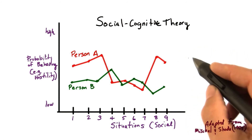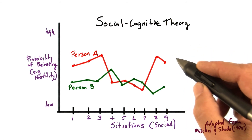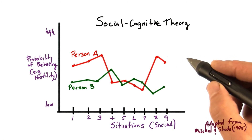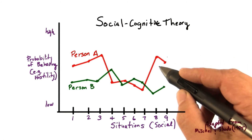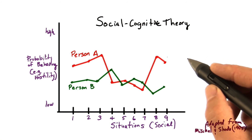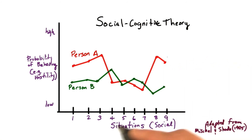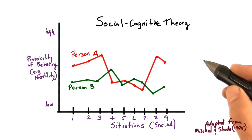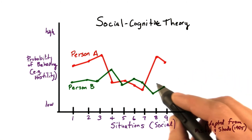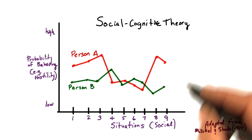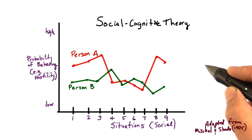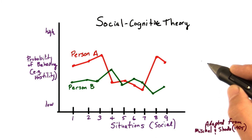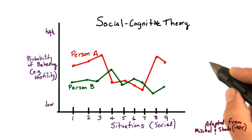Social cognitive explanations of personality argue that behavior is a result of the interaction between the personal — that is, cognitive beliefs — and the social, that is the situational factors; between internal and external forces. Different people bring different beliefs and interpretations to each situation, and therefore have different personalities.